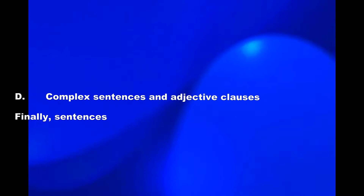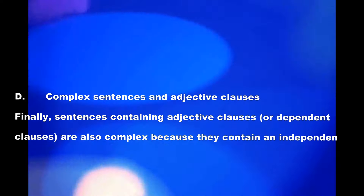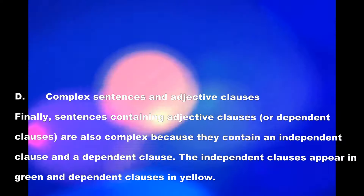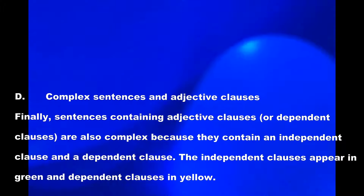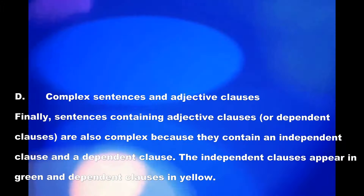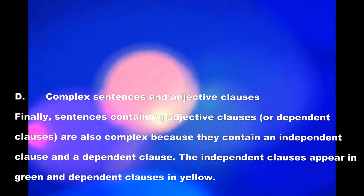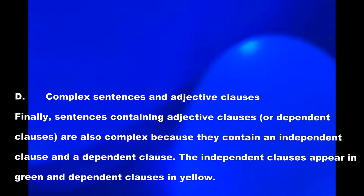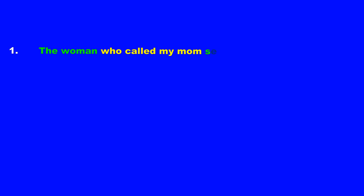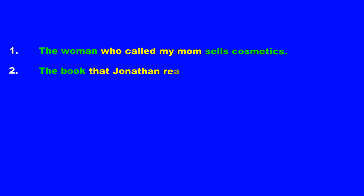Complex sentences and adjective clauses. Sentences containing adjective clauses, or dependent clauses, are also complex because they contain an independent clause and a dependent clause, in which case the dependent clause is in the middle of the independent clause. In the following examples, the adjective clause — which is also a dependent clause — is in yellow, and the rest of the sentence, in green, is the independent clause. In other words, the adjective clause in these situations is embedded within the independent clause.